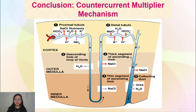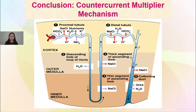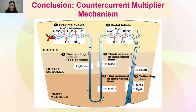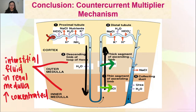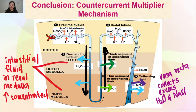Terlampau banyak garam dengan air pun tidak bagus — vasa recta yang tukang ambil nanti. Quick conclusion about the counter current multiplier mechanism: water goes out via osmosis; salts are pumped out; interstitial fluid in the renal medulla becomes concentrated; water moves out — urine becomes concentrated; and then all that excess water and excess salt is collected by the vasa recta.